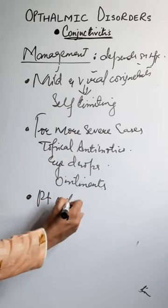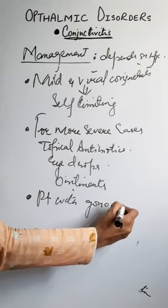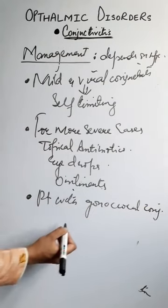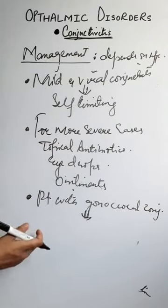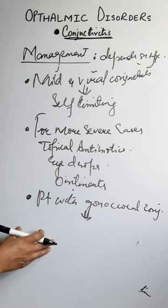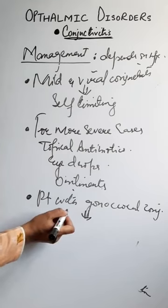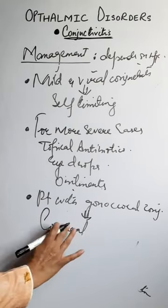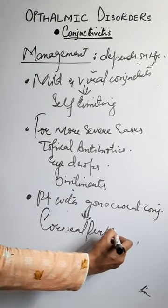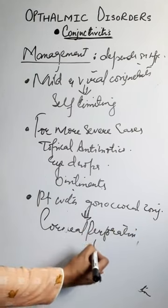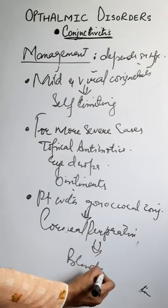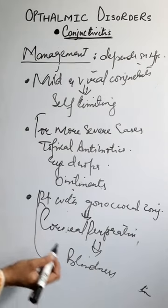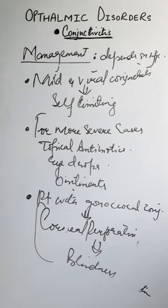For example, if the patient has gonococcal conjunctivitis due to gonococcal infection, we require urgent antibiotic therapy. Why? Because if this type of conjunctivitis is left untreated, it can lead to corneal perforation, and because of that, blindness can occur. So to prevent this, we have to use urgent antibiotic therapy.